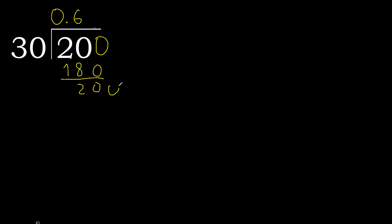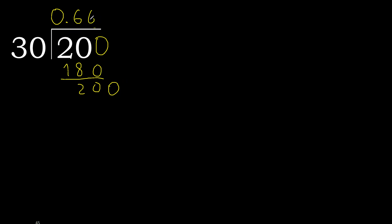There is no number, therefore complete — 0 point. Ok. 200 again. 30 multiplied by 6, subtract, complete. This repeats — therefore 6 repeats.